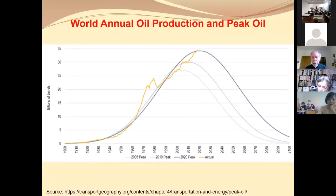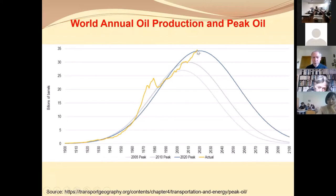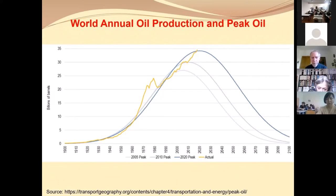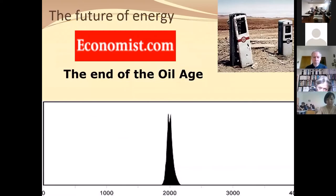Fossils are non-renewable, so they will end at some point. Here you see various ways to depict what will happen — when is peak oil happening? The yellow line is the actual data, and it depends on what you include in oil. In one simple interpretation, peak oil happened in 2005. In other calculations it's still ongoing. But at some point it will end — we will have an end of the oil age. When it comes to sustainability, we have to think beyond oil and fossil fuels.